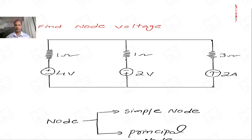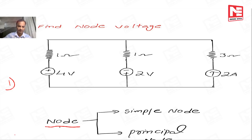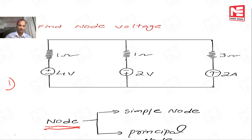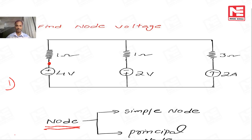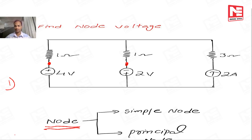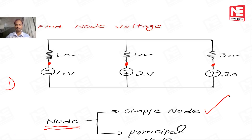In nodal analysis, the first step is to identify the total number of principal nodes in the network. In a node, there are two types: one is a simple node and the other is a principal node. If two elements are connected together, the common point is called a simple node. If more than two elements are connected together, the common point is called a principal node. This is one principal node and this is another principal node.